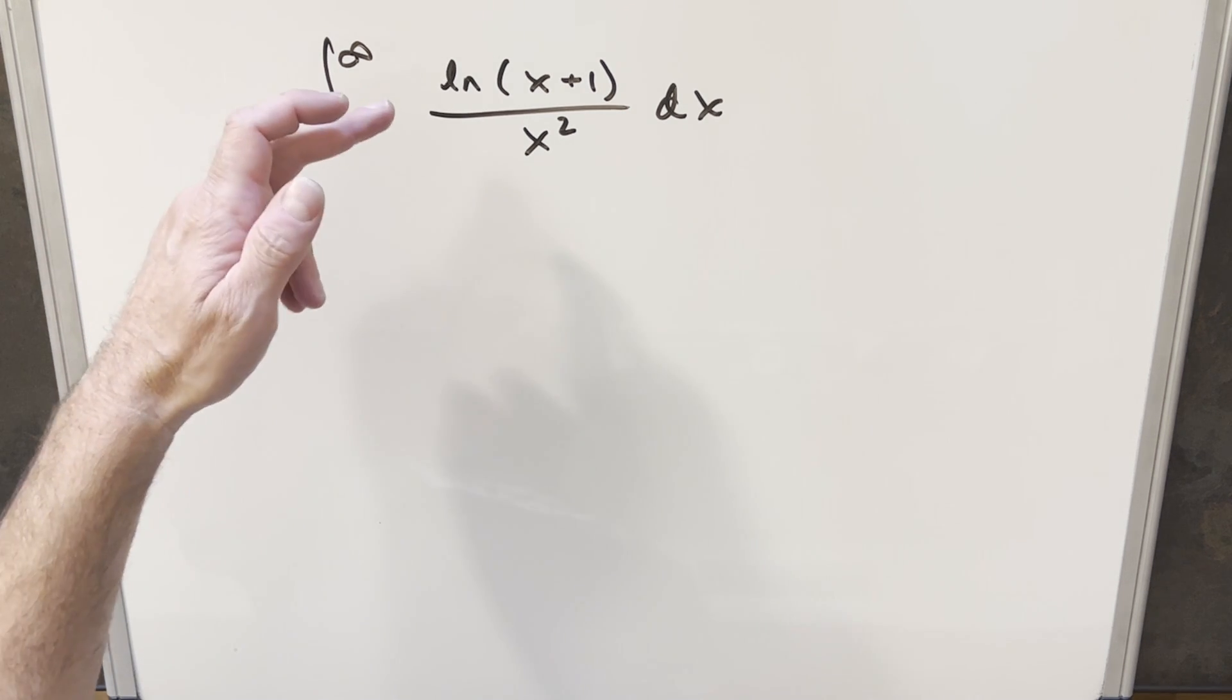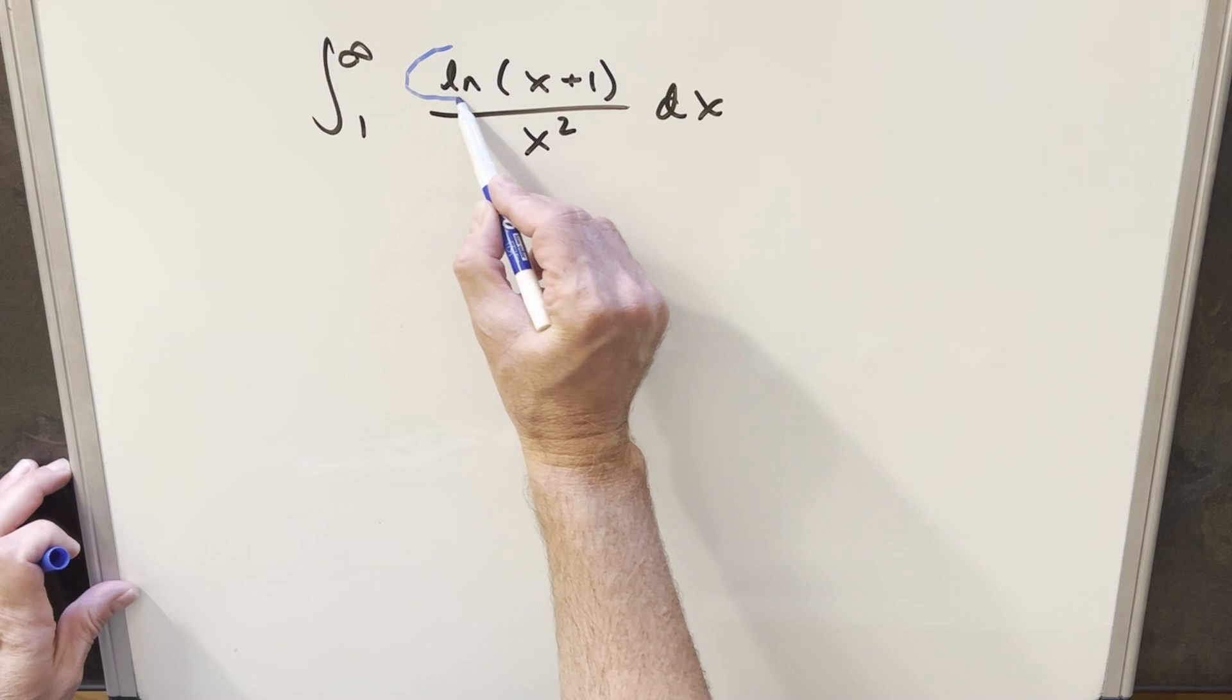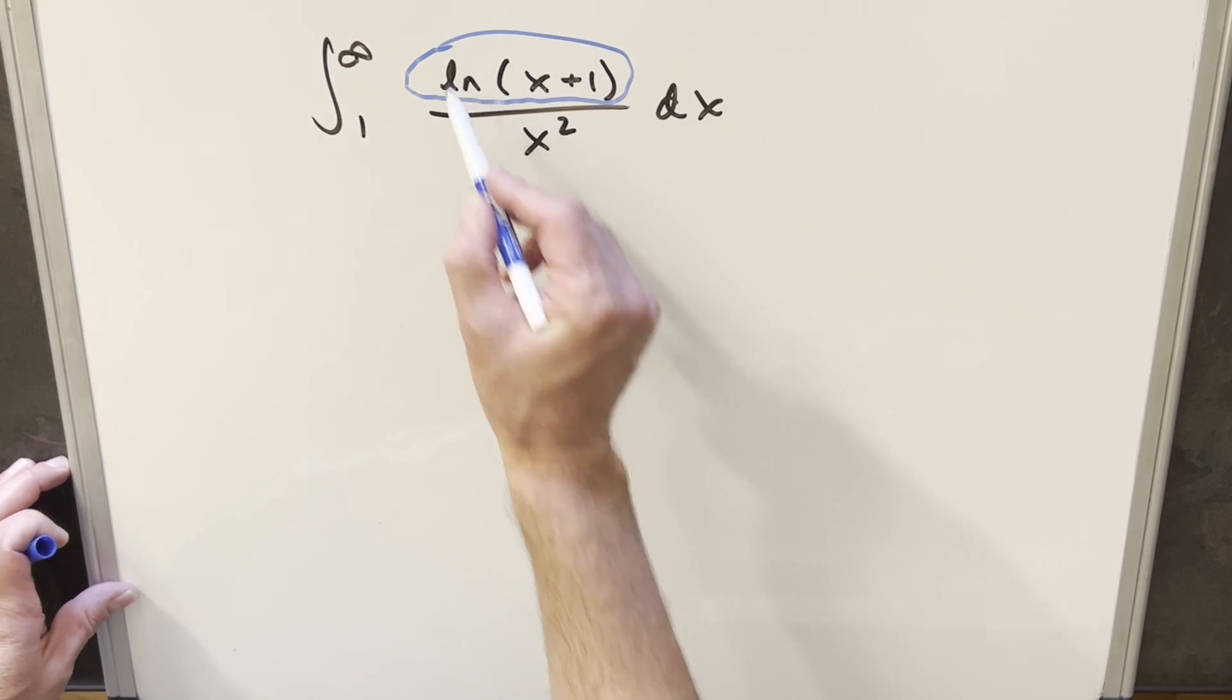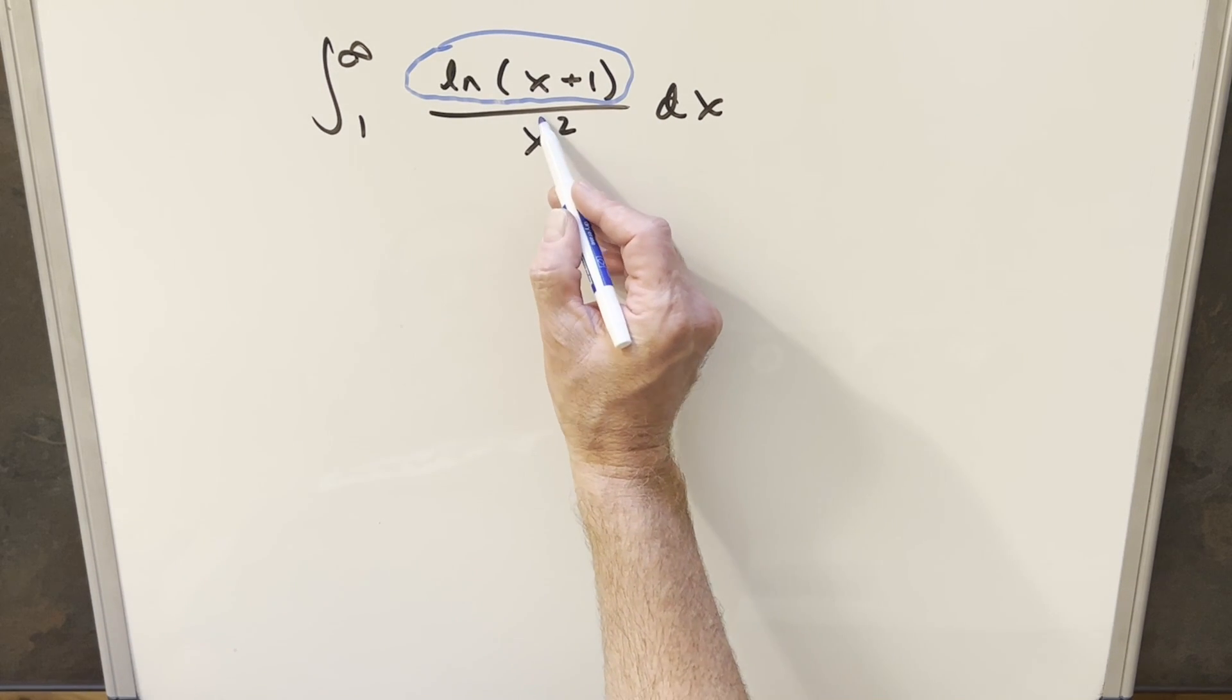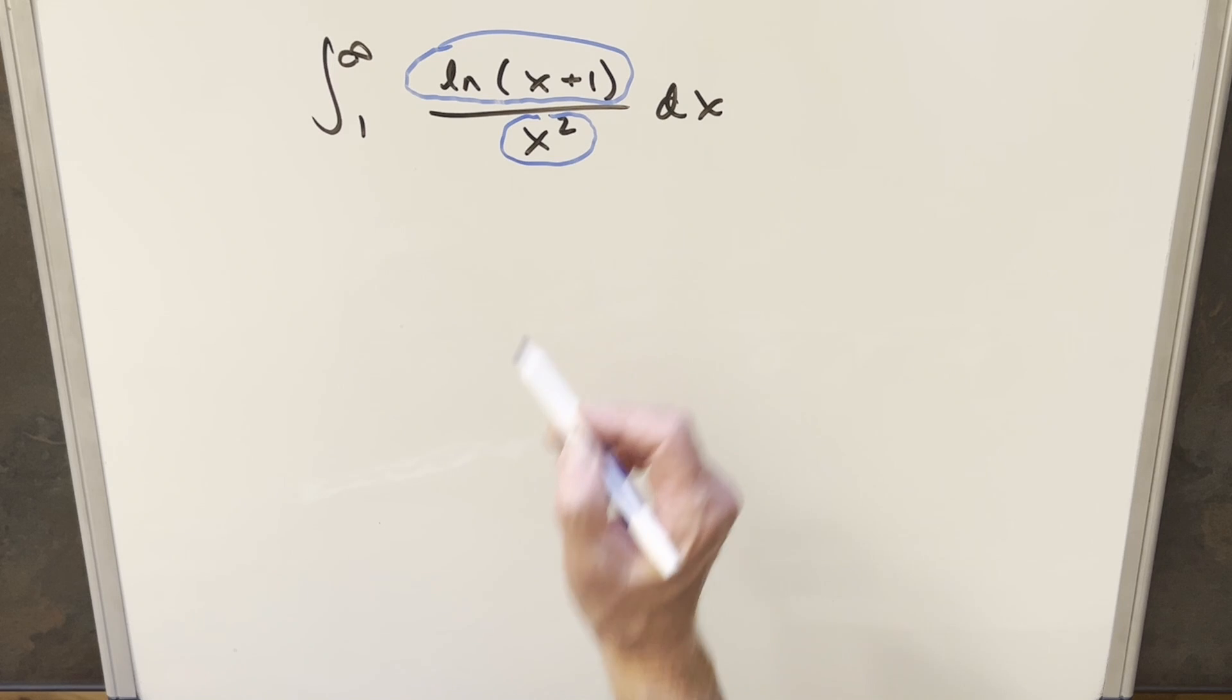Because what you could do is integration by parts. You could differentiate natural log x plus 1, integrate 1 over x squared using power rule, and it's going to work out fine that way. I think it's easier that way. Usually integration by parts tends to be easier, so if you're in a rush, go ahead and do it that way. But for me, let's do this using Feynman's trick.